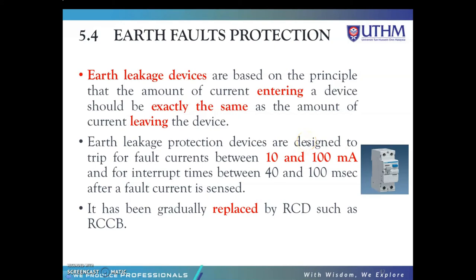We continue with the earth fault protection. First, we have to know what is earth fault. Earth fault is an inadvertent fault between the live conductor and the earth. When earth fault occurs, the electrical systems get short circuit and the short circuit current flows through the system. The fault current returns through the earth or any electrical equipment which damages the equipment. It also interrupts the continuity of the supply and may shock the user. Therefore, fault protective devices are used in the installation.